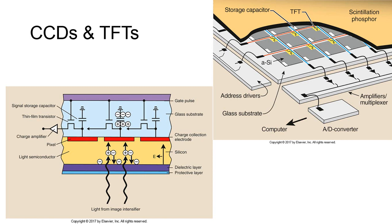When a hole reaches the electrode, it pulls an electron from it, creating a positive charge on the electrode, which can easily be measured by the circuit. This charge is then collected within a storage capacitor. Thin-film transistors are used in direct conversion systems to form an active matrix array, which, once scanned, sends an electric signal to an amplifier to become digitized and stored, and ultimately is sent to the display system.